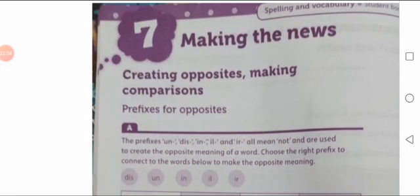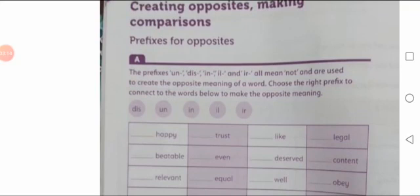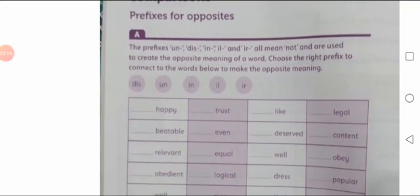This section is related to making the news and creating opposites and making comparisons. In Part A, we have prefixes for opposites. The prefixes UN, DIS, IN, IL, and IR all mean NOT and are used to create the opposite meaning of a word.